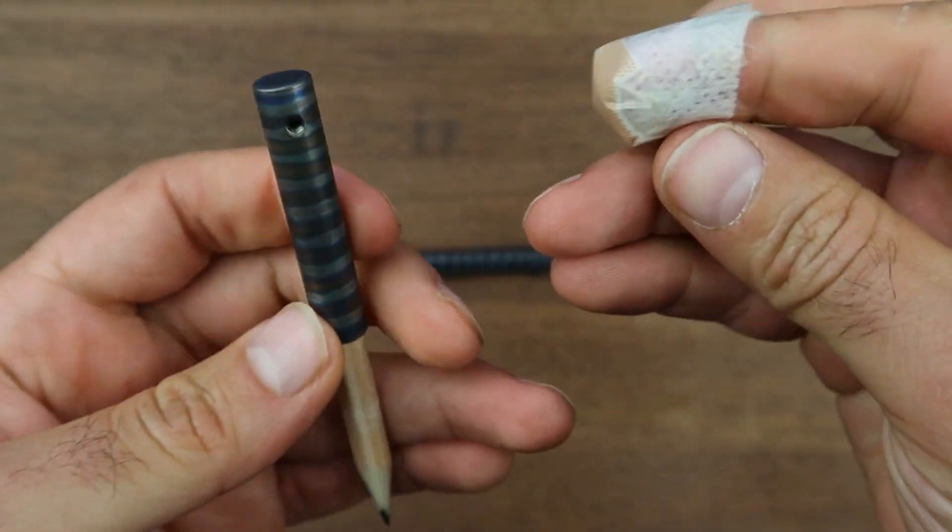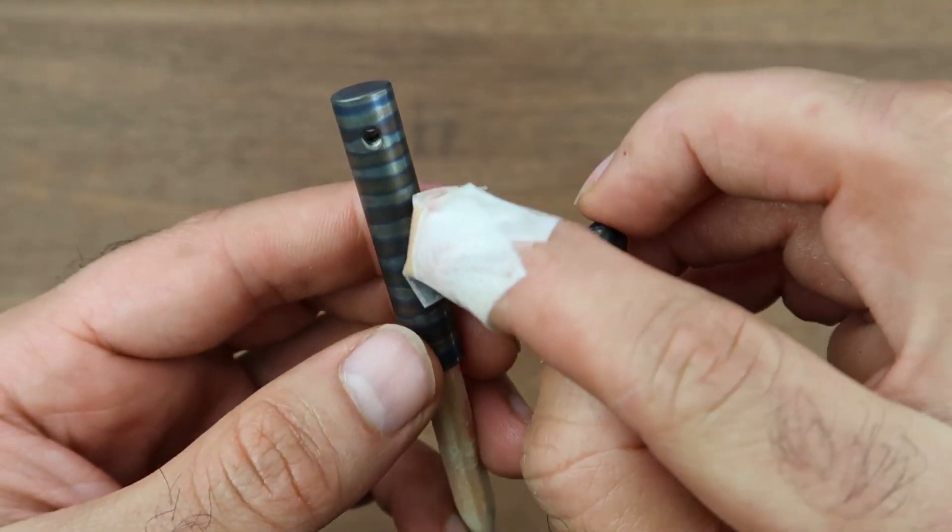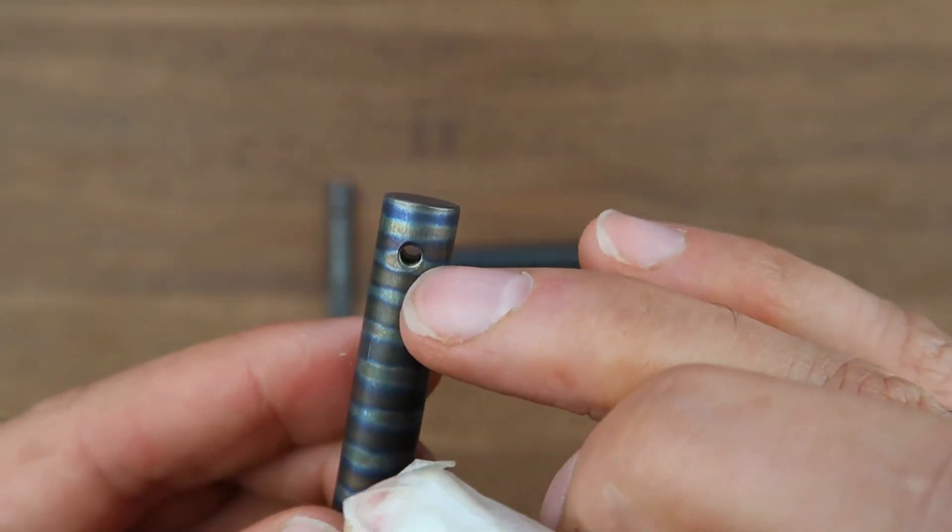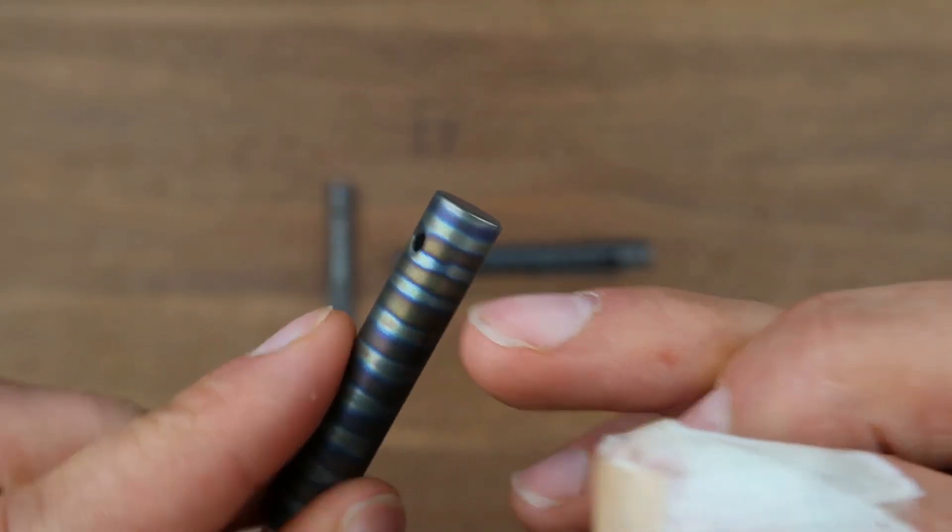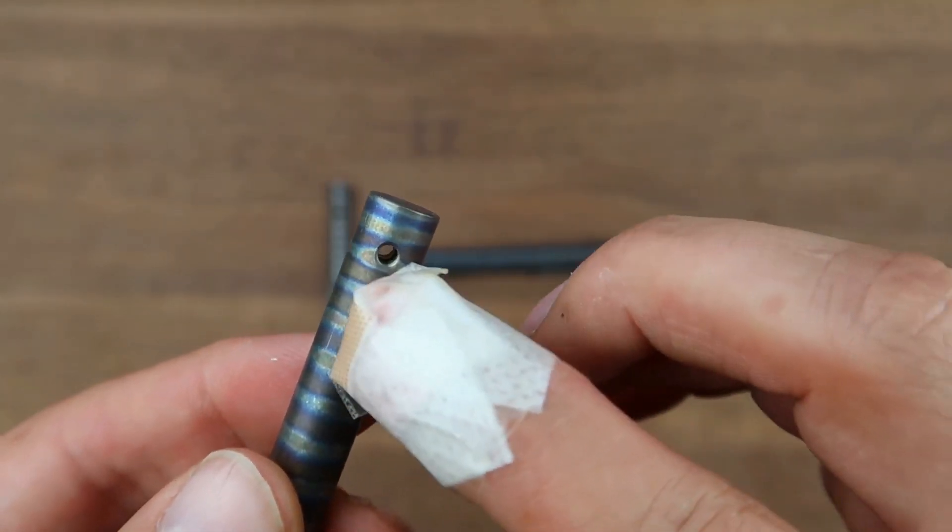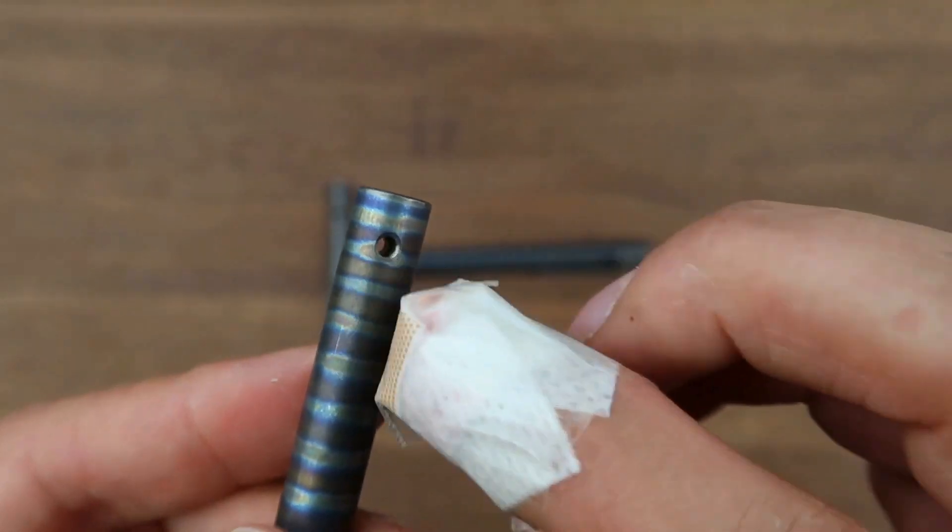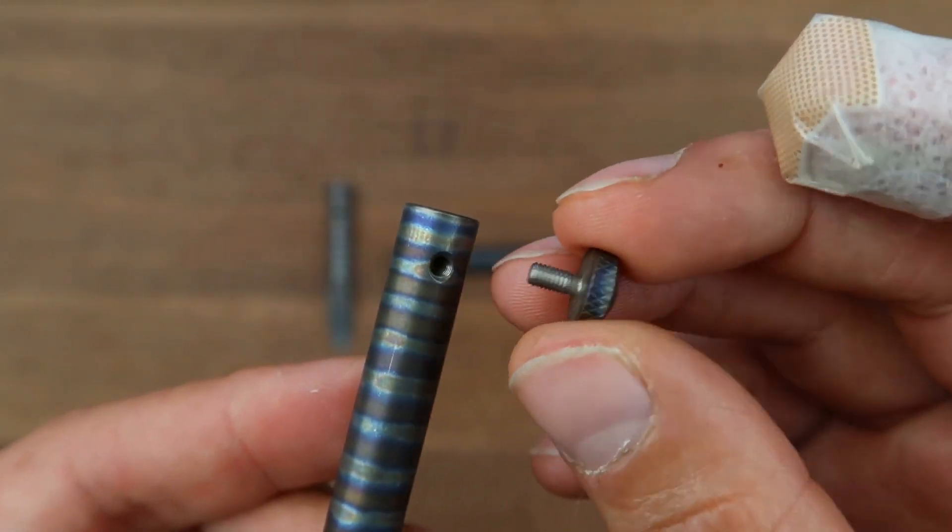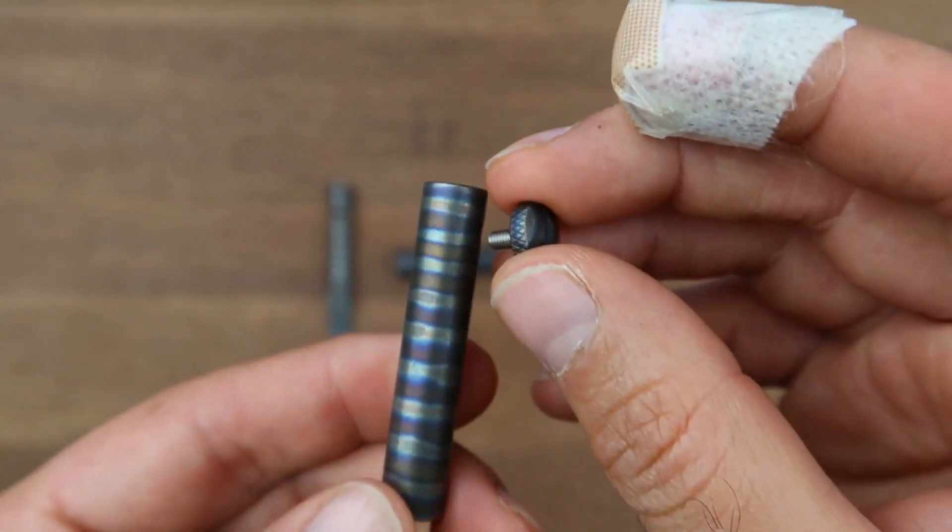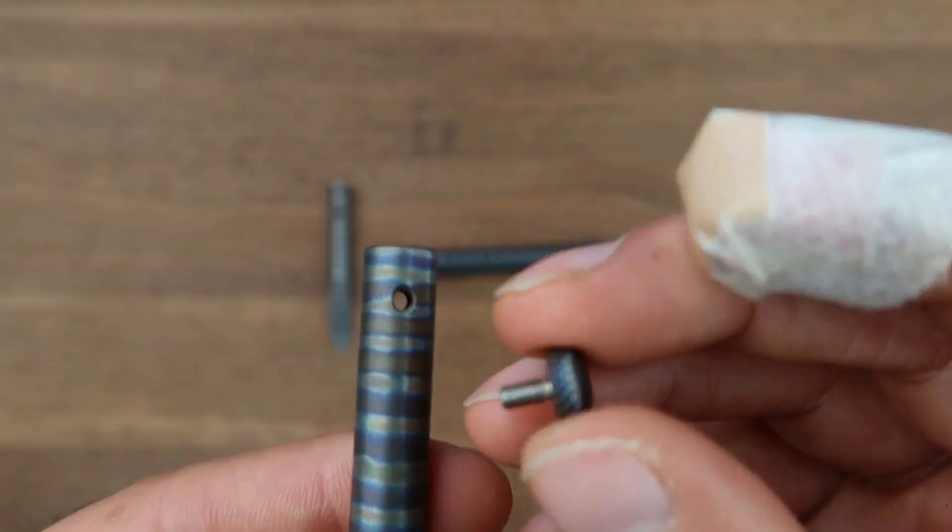Then you're going to have to screw this back on. Something to be really mindful of is only one part of the holes is tapped. You have the hole on both sides but only one side of the holes, one of the holes is tapped, so you cannot actually screw this back onto the other side.